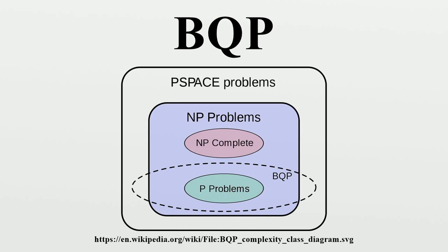n is the length of input. BQP can also be viewed as the class defined by a uniform family of quantum circuits. A language L is in BQP if and only if there exists a polynomial time uniform family of quantum circuits such that for all n, Qn takes n qubits as input and outputs one bit, for all x in L, and for all x not in L.